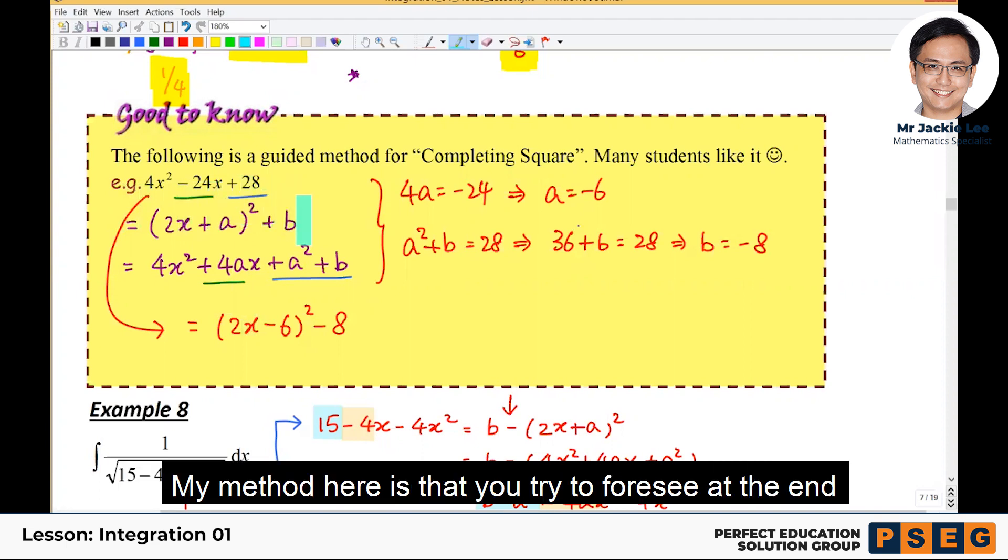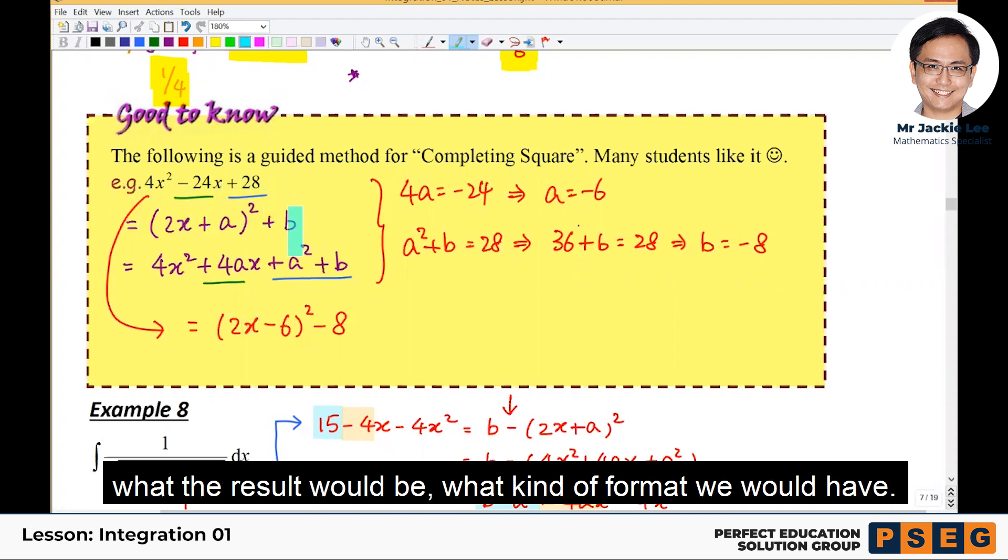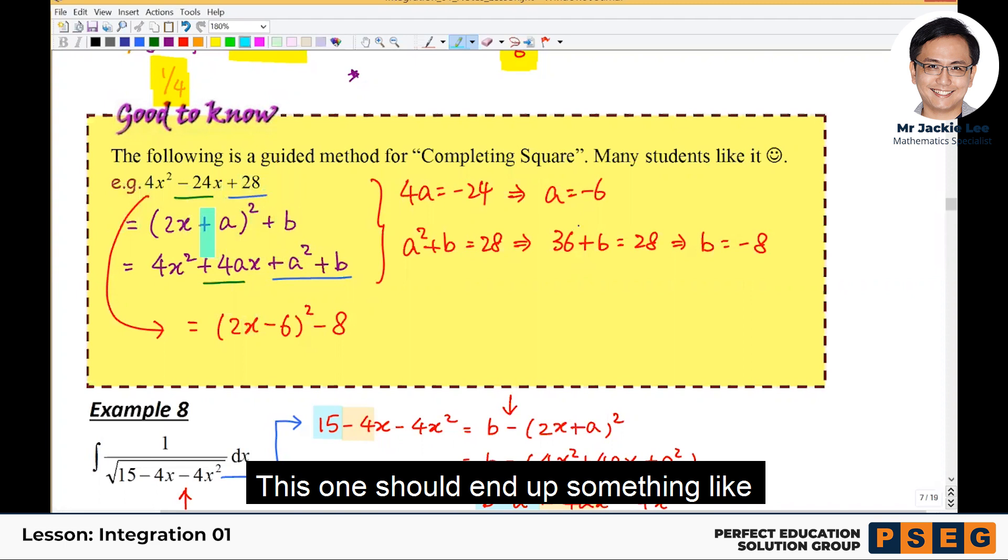Now my method here is that you try to foresee at the end what would be the result, what kind of format we have. Isn't that this one should end up something like 2x plus a bracket square then plus b, right? I hope you know why this is 2x, because you know this is 4x square. You square 2x bracket square, you know that you're going to get 4x square.